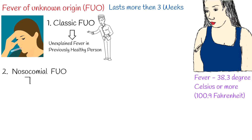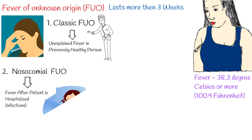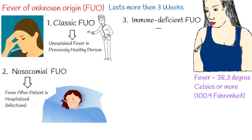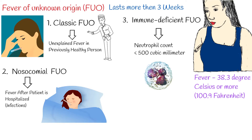The second category is Nosocomial FUO, where fever is associated with the time after a patient has been hospitalized. The most common causes of nosocomial fever are infections. The third category is Immune-deficient FUO, also known as neutropenic FUO, defined as recurrent fever in a patient whose neutrophil count is below 500 per cubic millimeter. In most of these cases, the fever is caused by opportunistic bacterial infections.